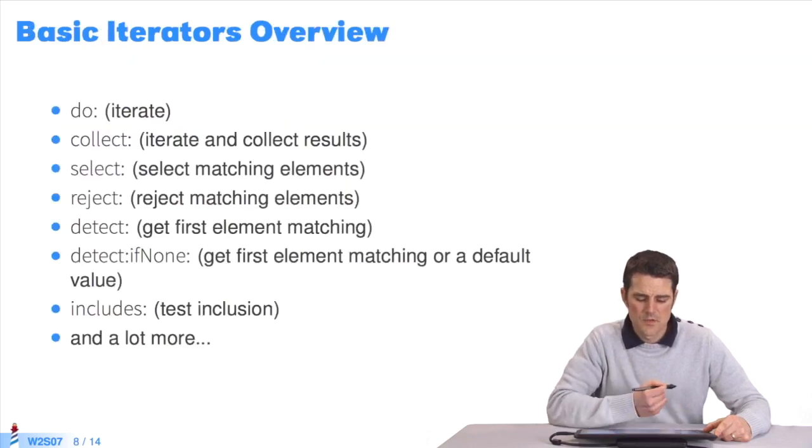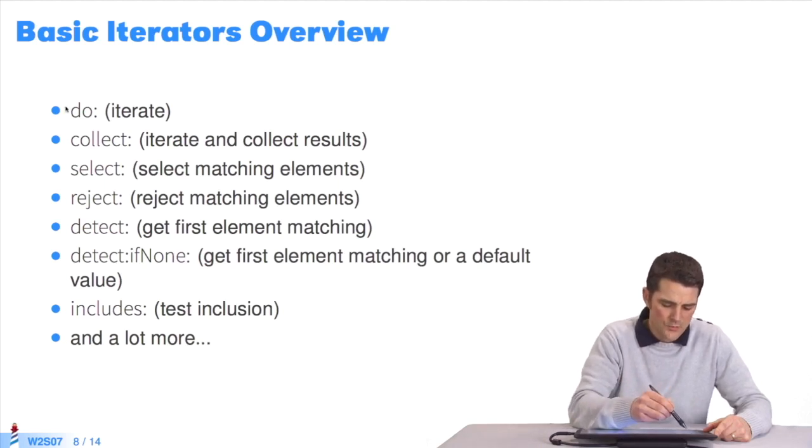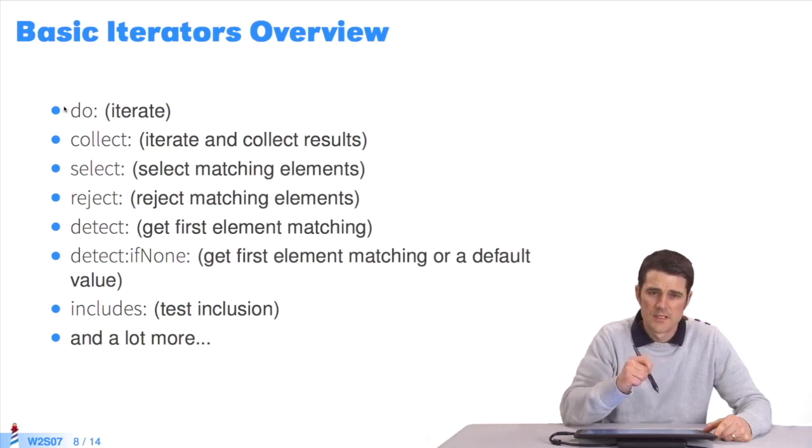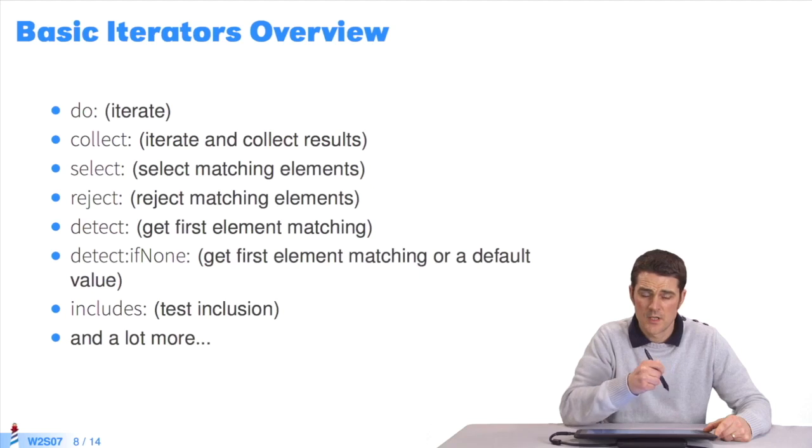There are also iterators to create loops. Iterators are messages that must be sent to collections, to collection objects. There are many types, such as do. Do iterates over every element of a collection. Collect iterates over the elements of a collection, but also collects the results to put them in a new collection.